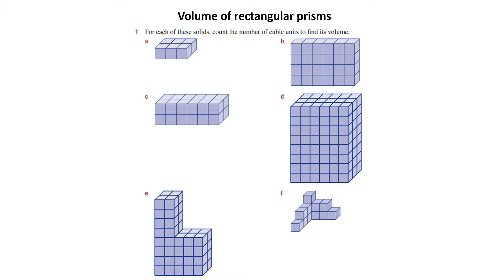So what we're going to look at is some questions for looking at volume of rectangular prisms. In this case we've got some little cubes that have been joined together and we're going to work out what their volume is.